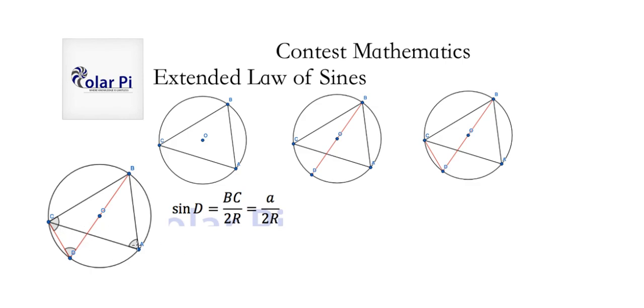But wait, we said that angle A here is of the same measure as angle D here. So we can substitute for angle D here with angle A. And if we do that, we'd be able to write this, which is instead of sine D, we can write sine A equals a over 2R. And then a little bit of arithmetic, or algebra rather, which is like multiplying both sides of this last equation by one over a, would get us here.